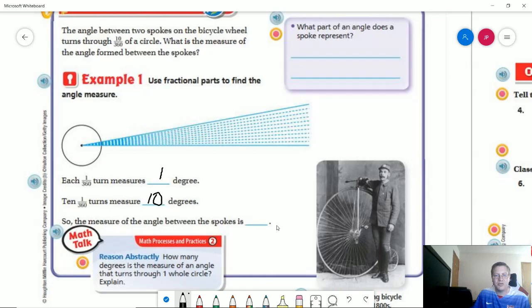So our angle is going to be 10 degrees. It works the same way as if you see degrees Fahrenheit or degrees Celsius. We can use this little tiny circle to show 10 degrees.